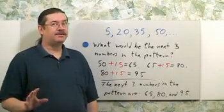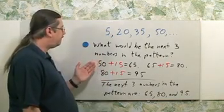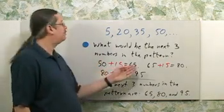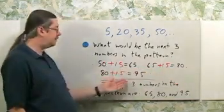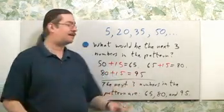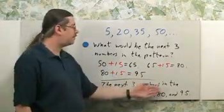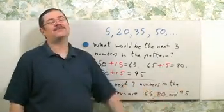A good way to answer this question is as follows: just show some of the work. You have 50, just add 15, you get 65. 65 plus 15 is 80. 80 plus 15 is 95. And then state in a nice sentence the answer: The next three numbers in the pattern are 65, 80, and 95.